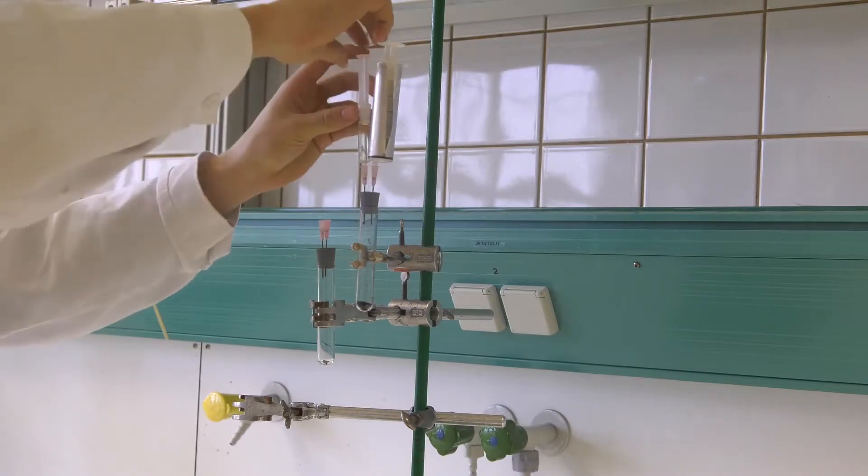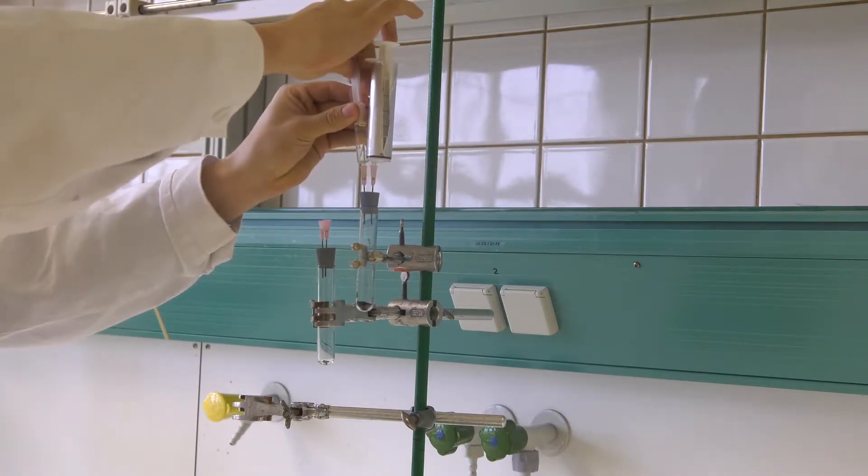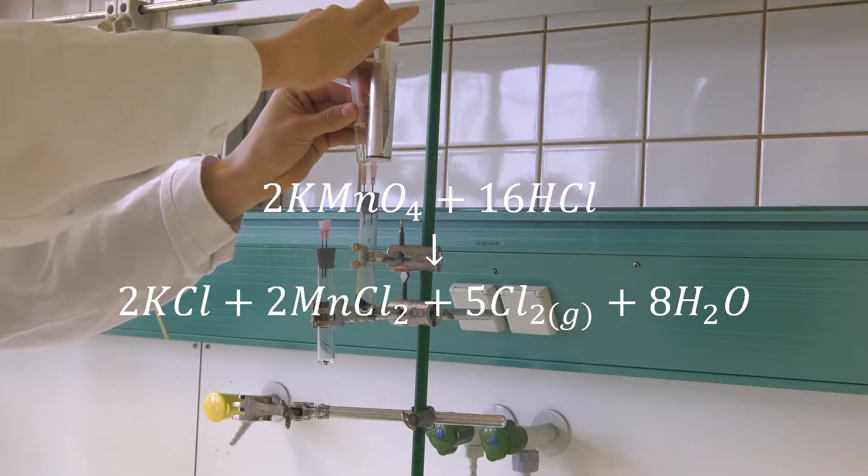Now, fill one cannula with hydrochloric acid and add it dropwise into the test tube. With this, you'll be able to produce 10 ml of chlorine gas.